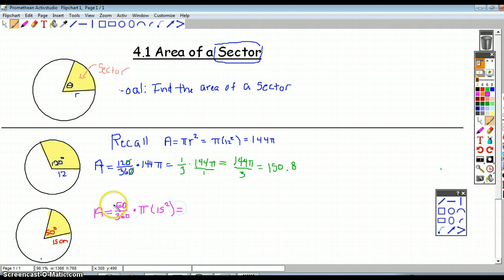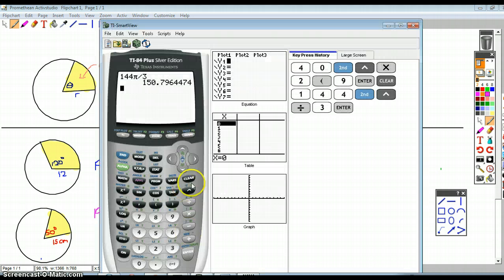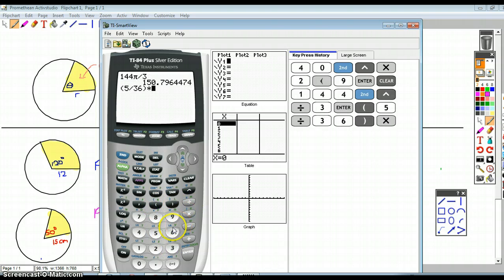What fraction of the area is this sector taking up? It's taking up 50/360 of it. So again, I can cross those off - this is 5 over 36, and 15 times 15 is 225. So we can take care of that: 5 divided by 36 times 225 times π.